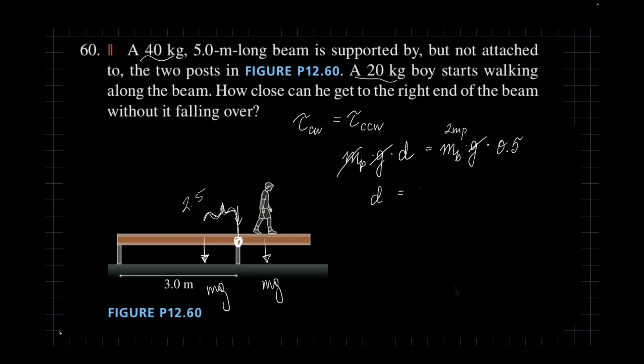Distance is just going to be two times 0.5, which is one meter. How close can he get to the right end of the beam? Well, if this right here is two meters and he's one meter away from the fulcrum, then the answer is one meter.